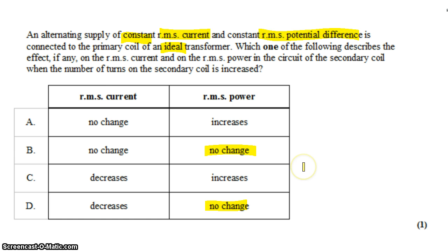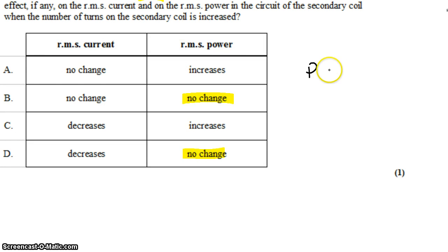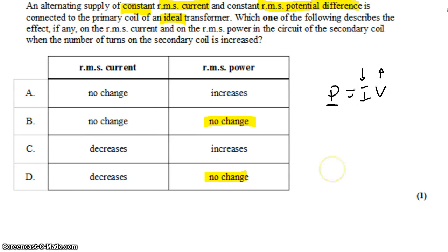However, we said that the power must remain the same, and we know that power is equal to current times voltage. So if the power stays the same, but the voltage increases, that means that the current must decrease. So increasing the number of coils on the secondary side leads to an increase in voltage and therefore a decrease in current. And so the correct answer would be D.